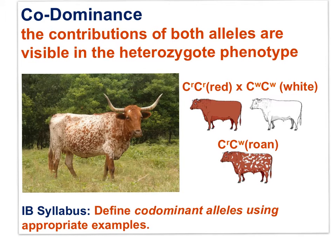Codominance is a heredity pattern in which both alleles, when present in the heterozygote, contribute to the phenotype. Codominance is a pattern following one gene with two alleles and the possibility of three phenotypes.